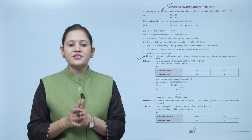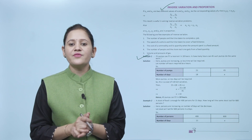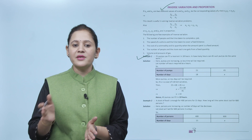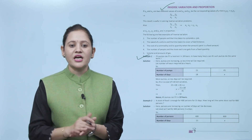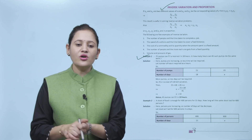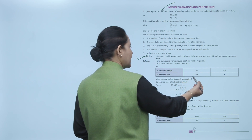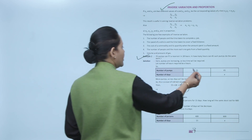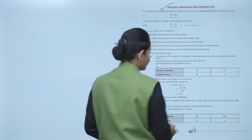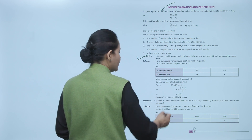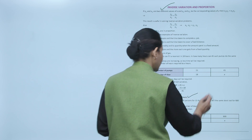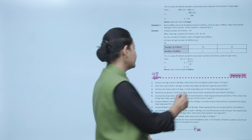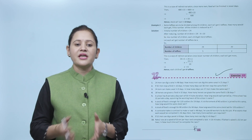Example: 25 pumps can fill a reservoir in 18 hours. In how many hours can 45 pumps do the same work? As the number of pumps increases, time decreases — this is inverse variation. Let the time required be x hours. So 25×18 = 45×x, giving x = (25×18)/45 = 10. Therefore 45 pumps can fill the reservoir in 10 hours.